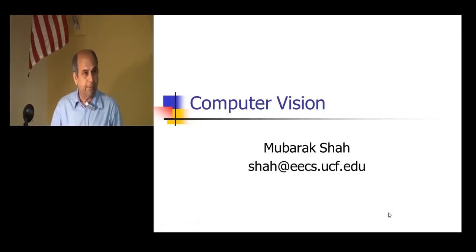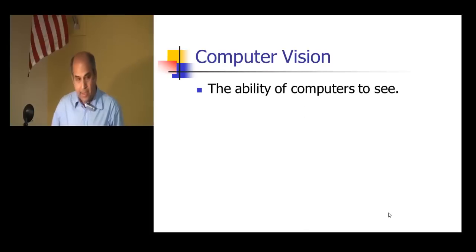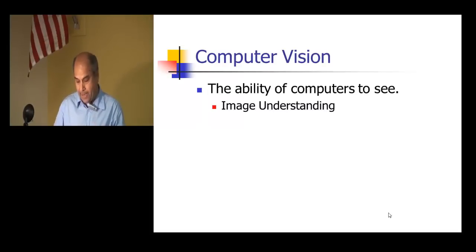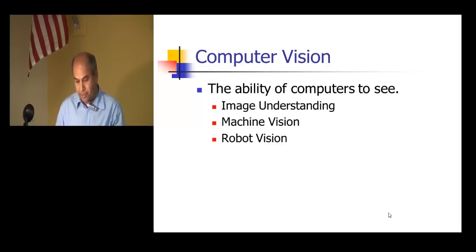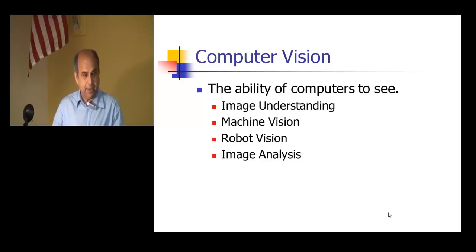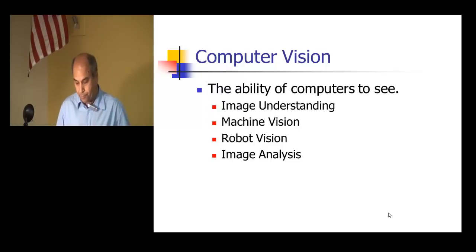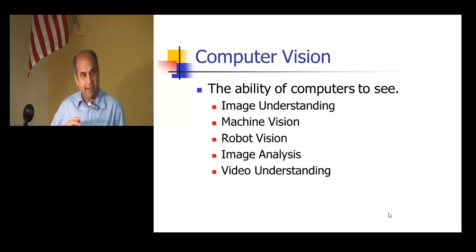I'm going to give you a very broad overview of computer vision. Computer vision in simple terms is just the ability of computers to see. It has different names: image understanding, machine vision, robot vision, image analysis — different terms that have been used interchangeably. The main idea is: given a picture, what can a computer tell about it? When you have a video, it's a sequence of images, and it's also called video understanding.